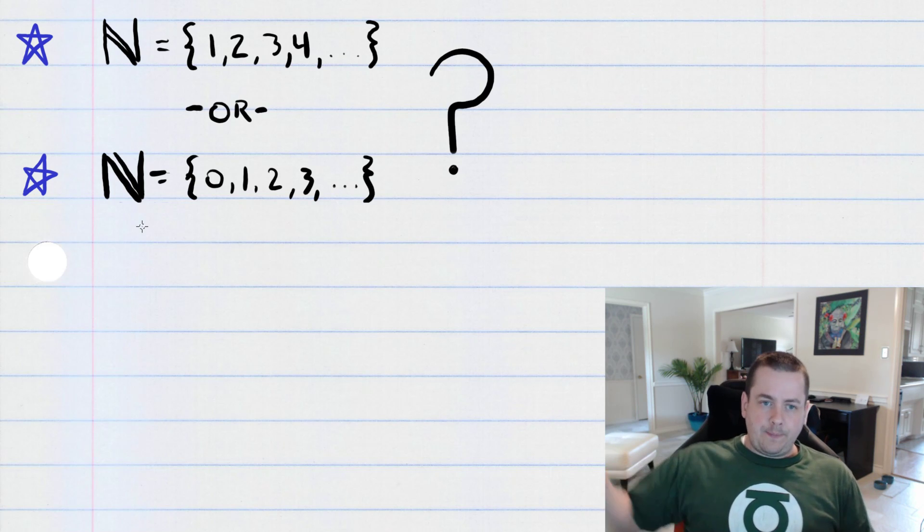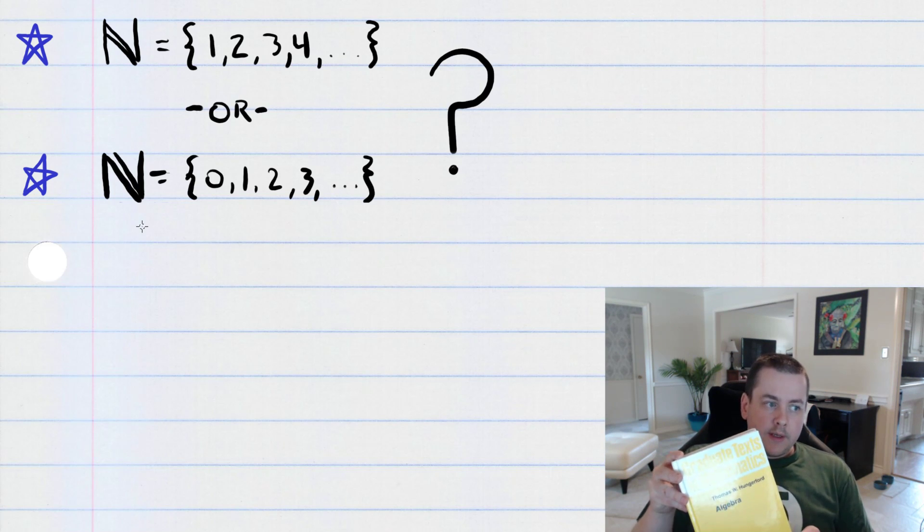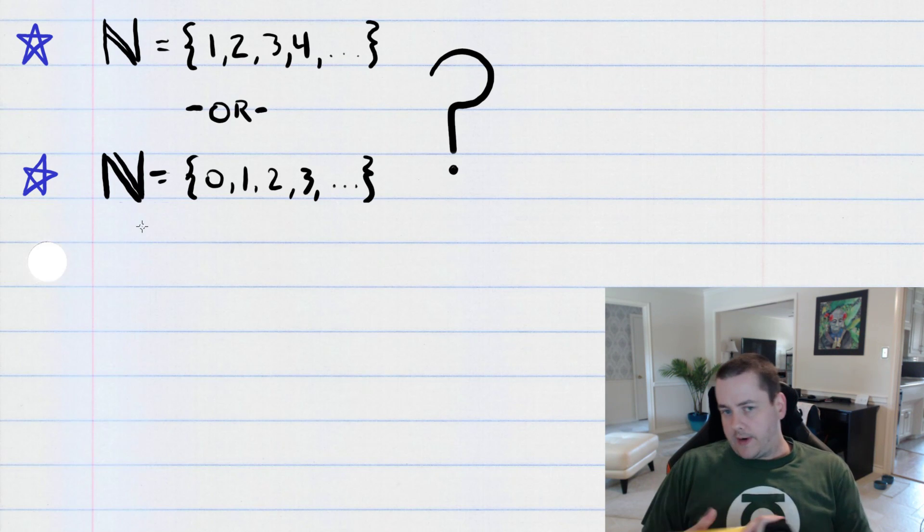On the other hand, this graduate level abstract algebra book says that the set of natural numbers is the set containing zero, one, two, three, four, five, and so on.